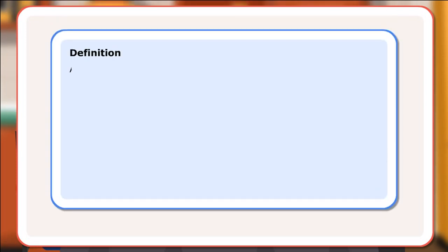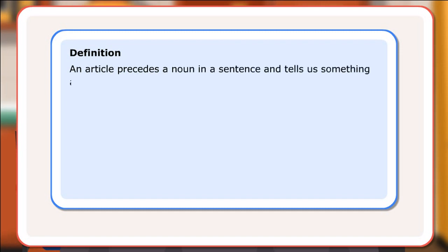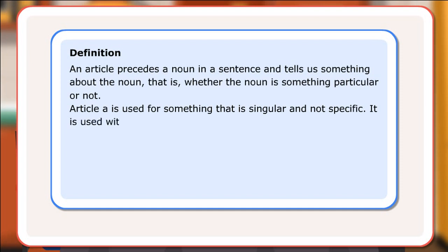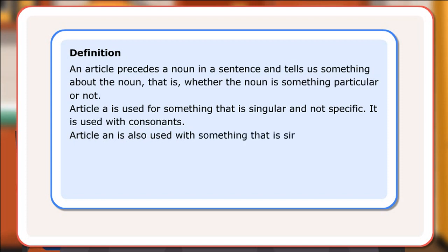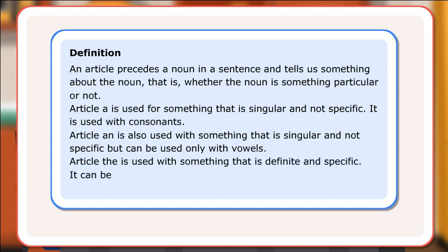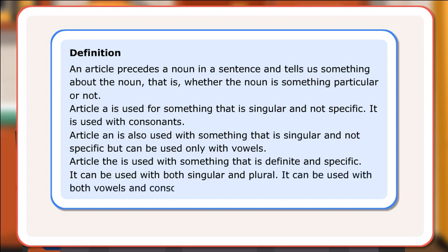Definition: An article precedes a noun in a sentence and tells us something about the noun — whether the noun is something particular or not. Article 'a' is used for something that is singular and not specific; it is used with consonants. Article 'an' is also used for something singular and not specific, but can be used only with vowels. Article 'the' is used with something that is definite and specific; it can be used with both singular and plural, and with both vowels and consonants.